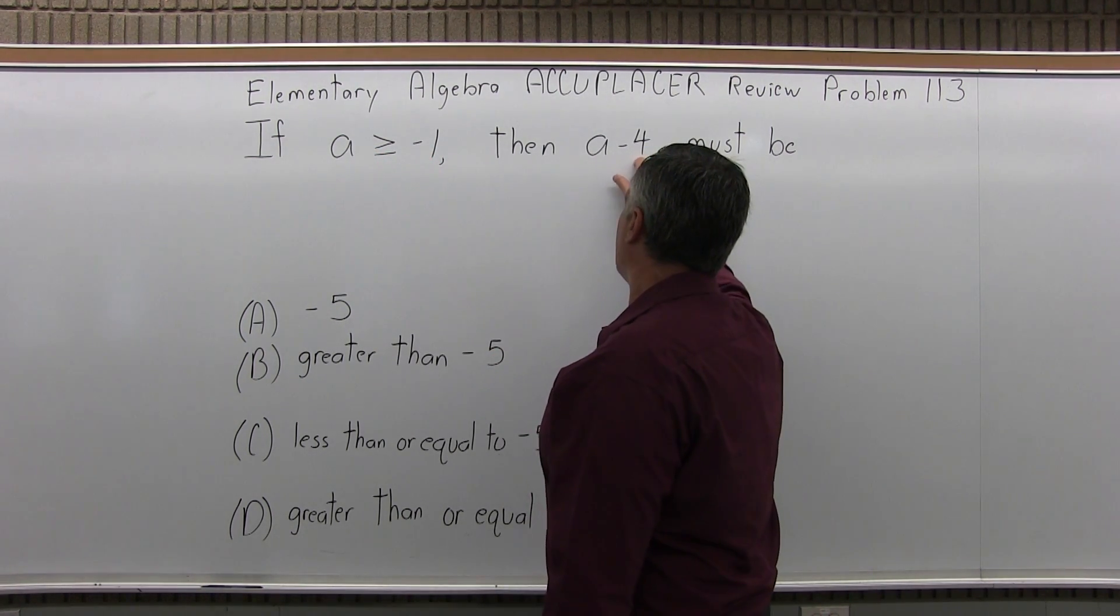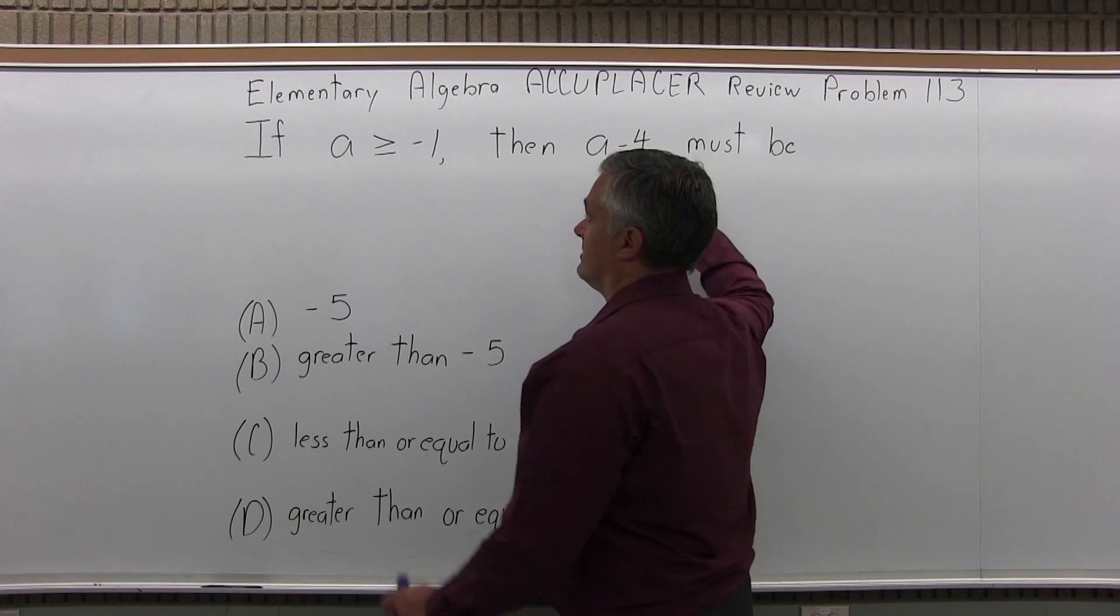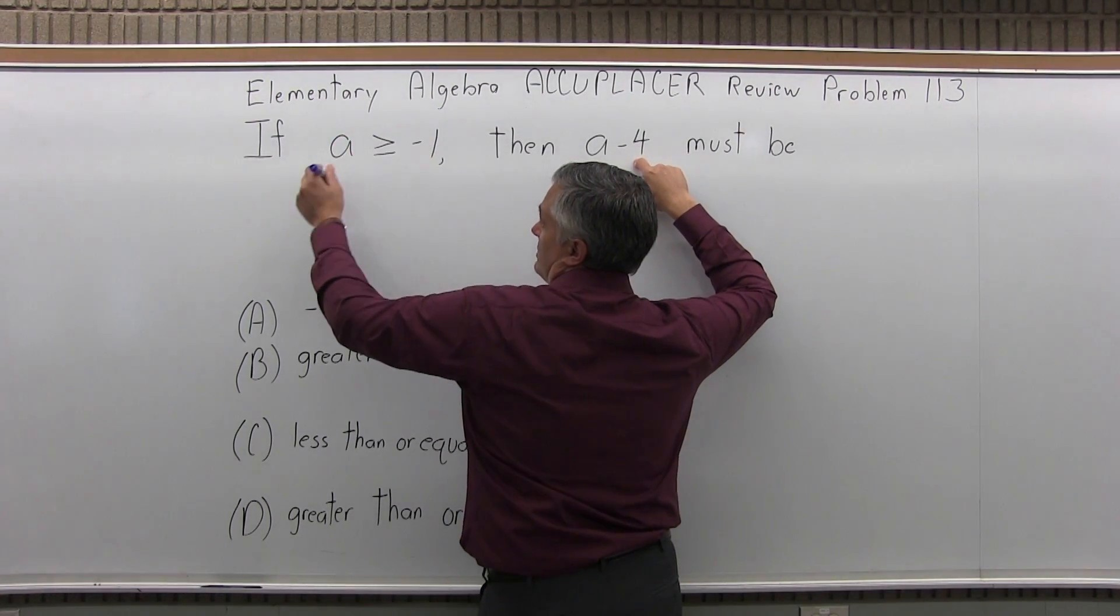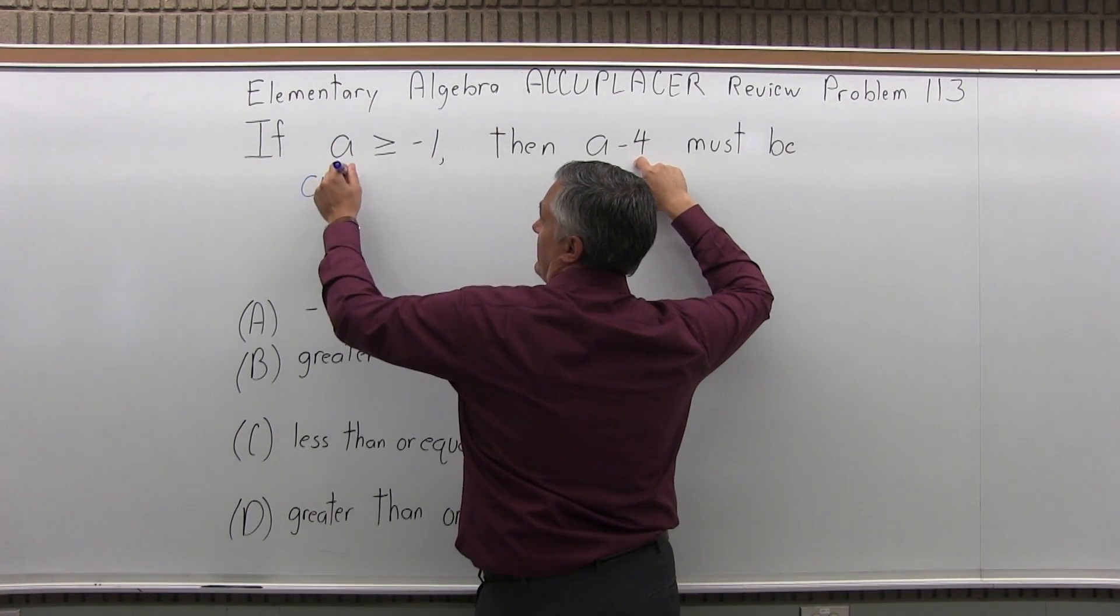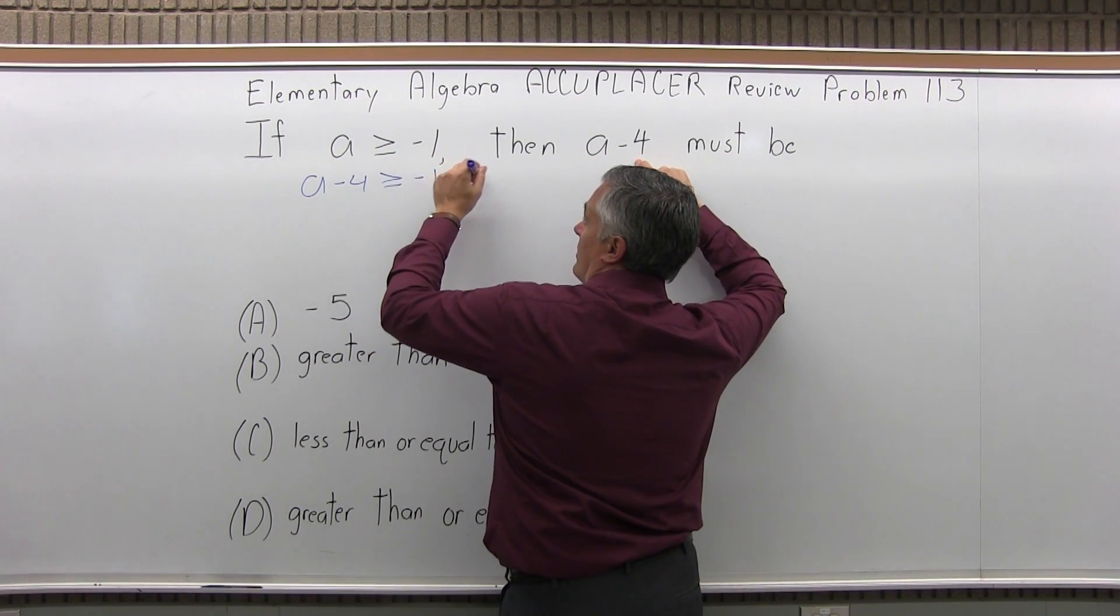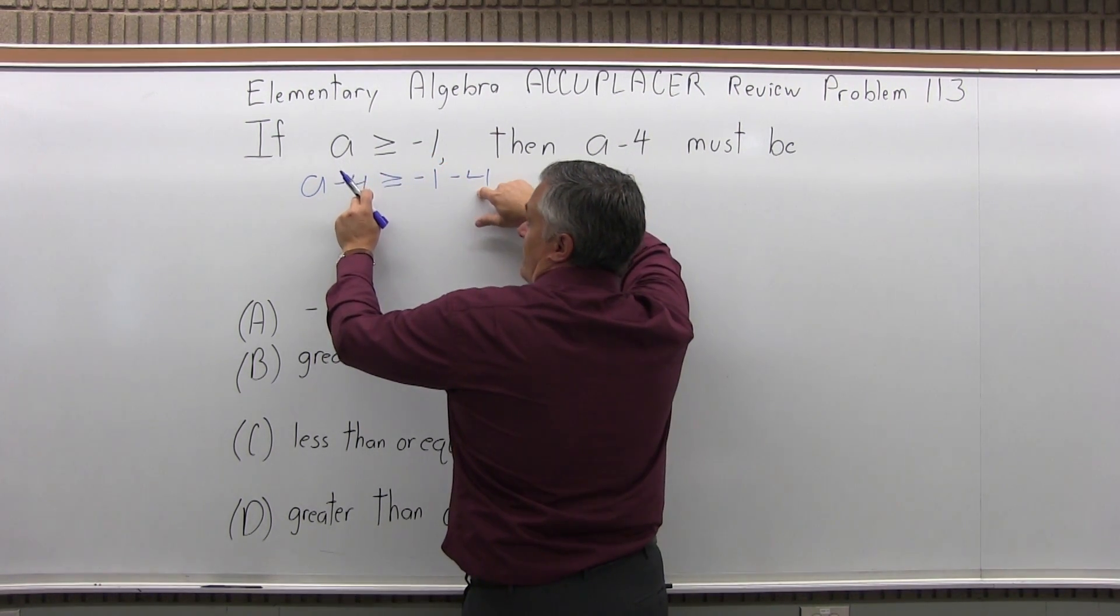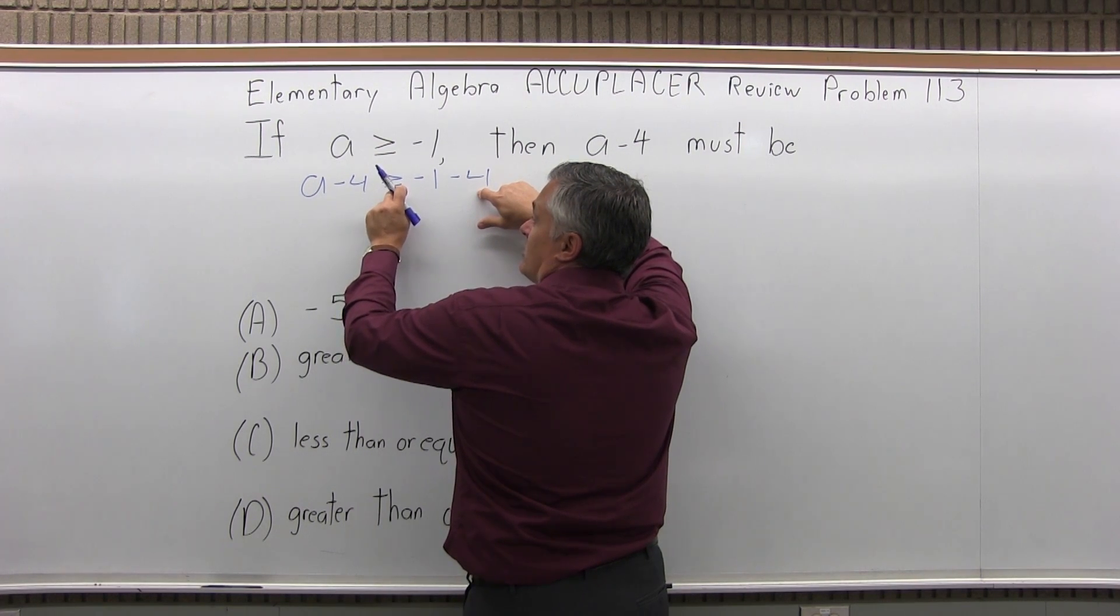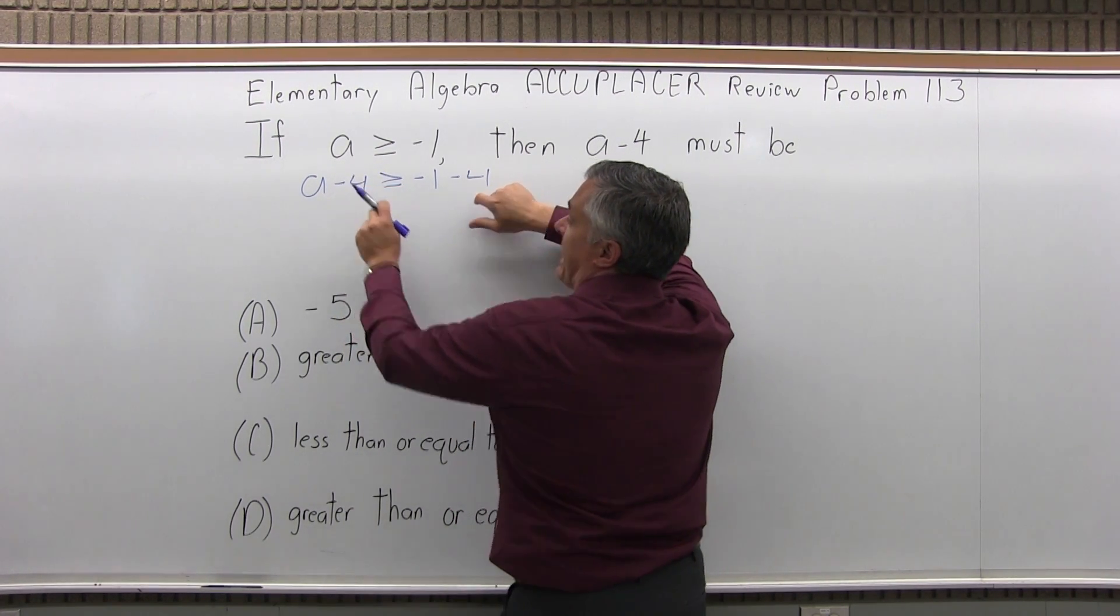So I want to know what A minus 4 is. I can just put a minus 4 on both sides and it'll tell me. So A minus 4 on the left, greater than or equal to negative 1 minus 4. I added a negative 4 on both sides. I don't have to flip the direction of the inequality symbol because I'm adding a negative.